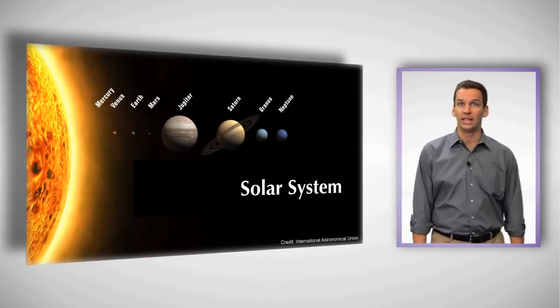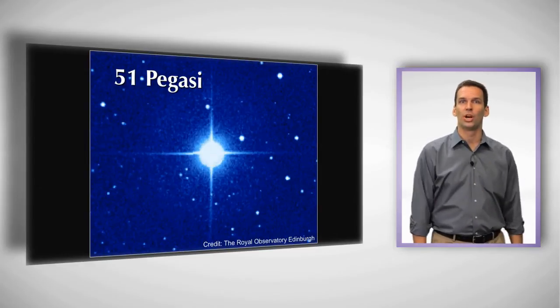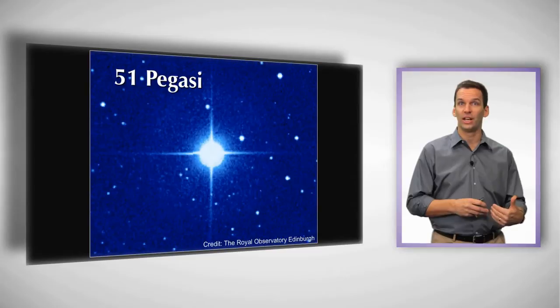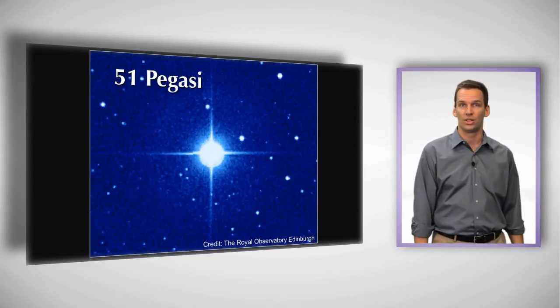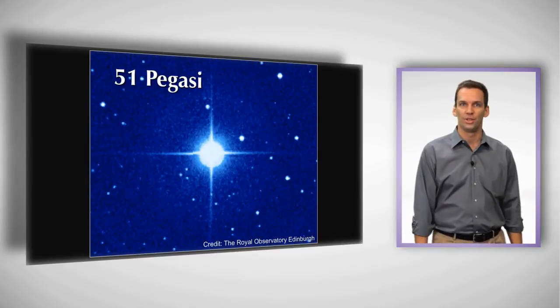The first one, found in 1995, was orbiting a star called 51 Pegasi, a star fairly close to our star. But since that time, astronomers have found hundreds and even thousands of planets orbiting stars outside of our solar system.